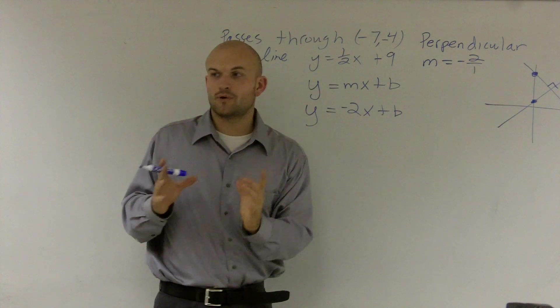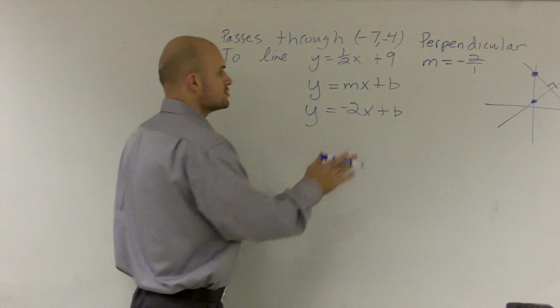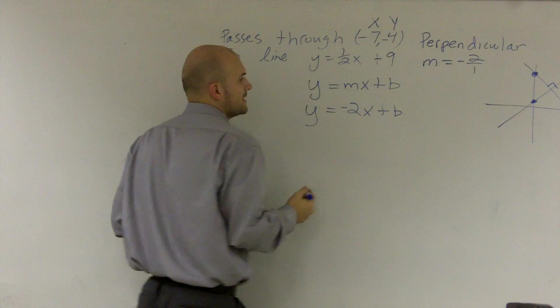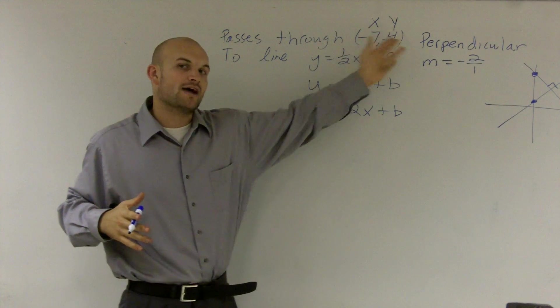OK? So it goes through this point. Therefore, that point is a solution to our equation. So what I can do is, if that's an x and y coordinate, I'm going to now plug in the x value in for x, and plug in the y value in for y.